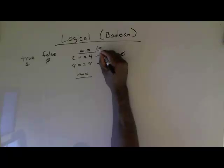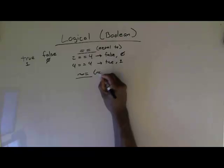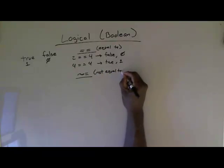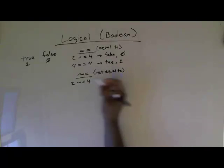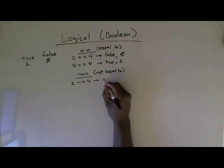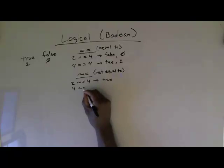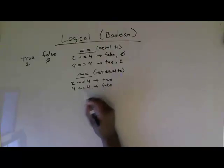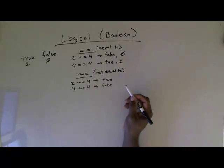So this is equal to, and this is not equal to. If I did two not-equal-to four, that actually is true or one. If I did four not-equal-to four, that's actually false because four is equal to four. So four not-equal-to four evaluates to false — that's the not-equal-to operator.